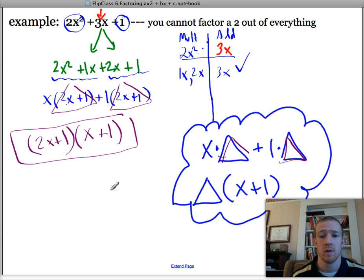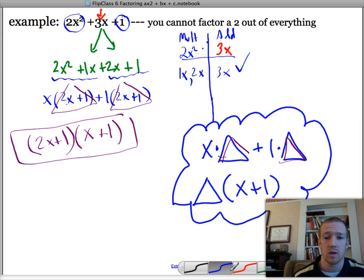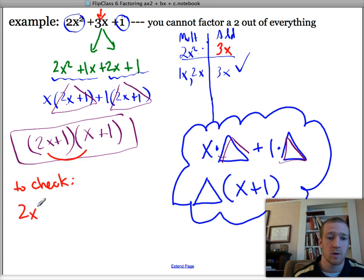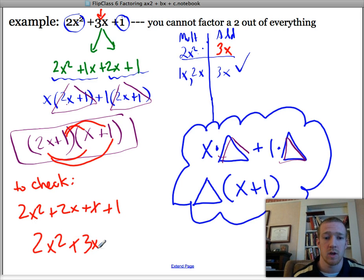If we wanted to check our answer, we would go back and foil it out, right? So this is just to check to make sure that we did it right. 2x times x is 2x squared. 2x times 1 is plus 2x. 1 times x is plus x, or 1x. And 1 times 1 is plus 1. Simplify, and you get 2x squared plus 3x plus 1, right? So that was just to check our answer.